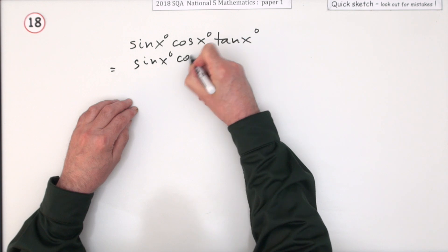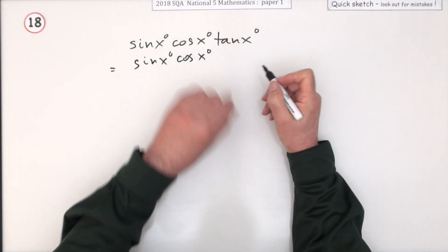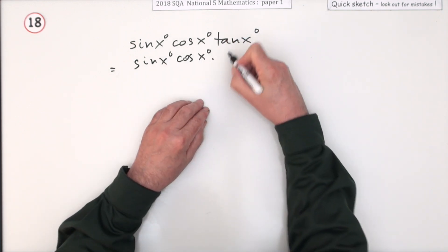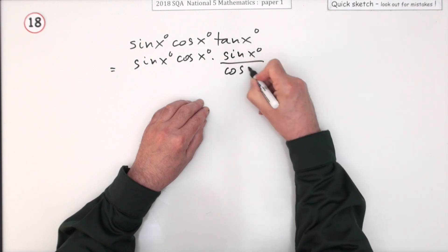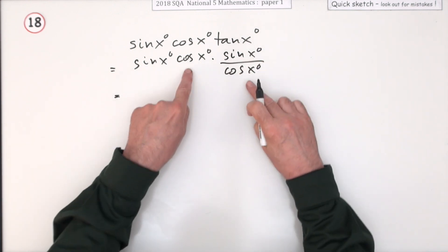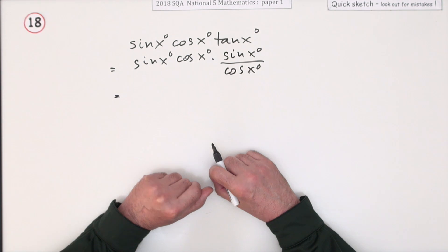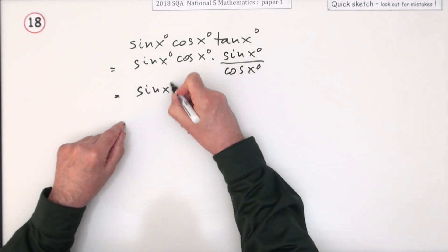So sin x will stay. Cos x will stay. It's a nuisance putting those wee degree signs in. But tan x can get rewritten as sin x over cos x. Now that of course means that these cos's cancel out. So you're left with and you could just go straight in with the answer. Well I'll put it down here.